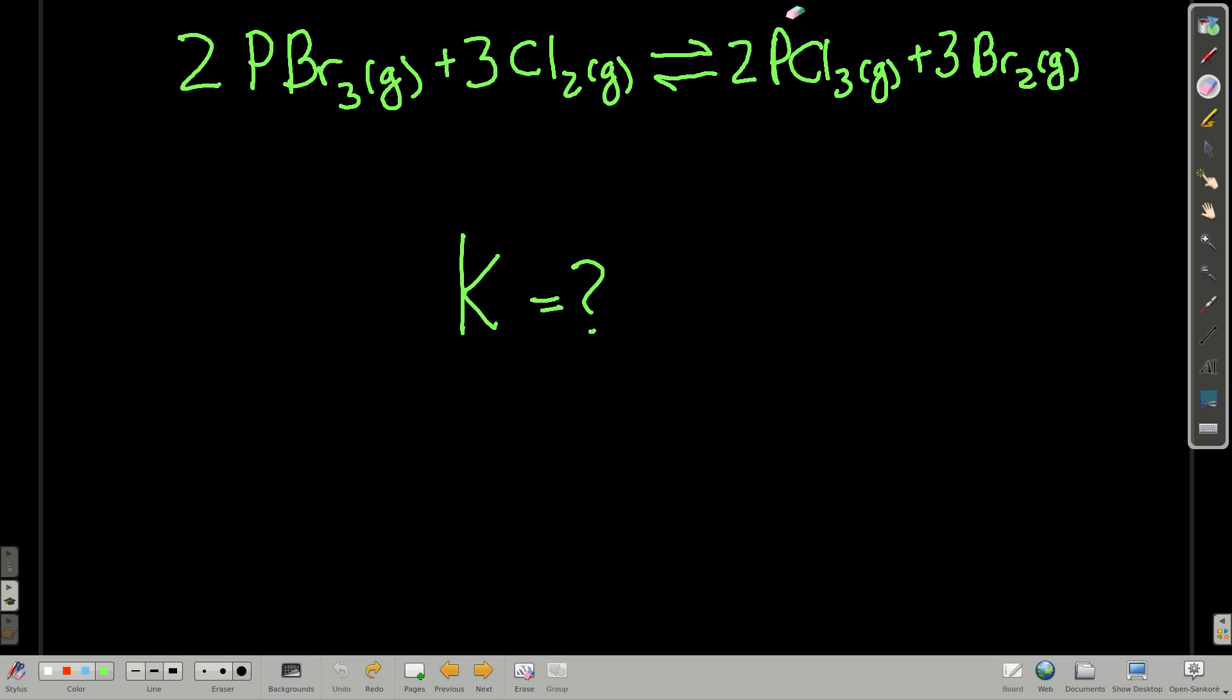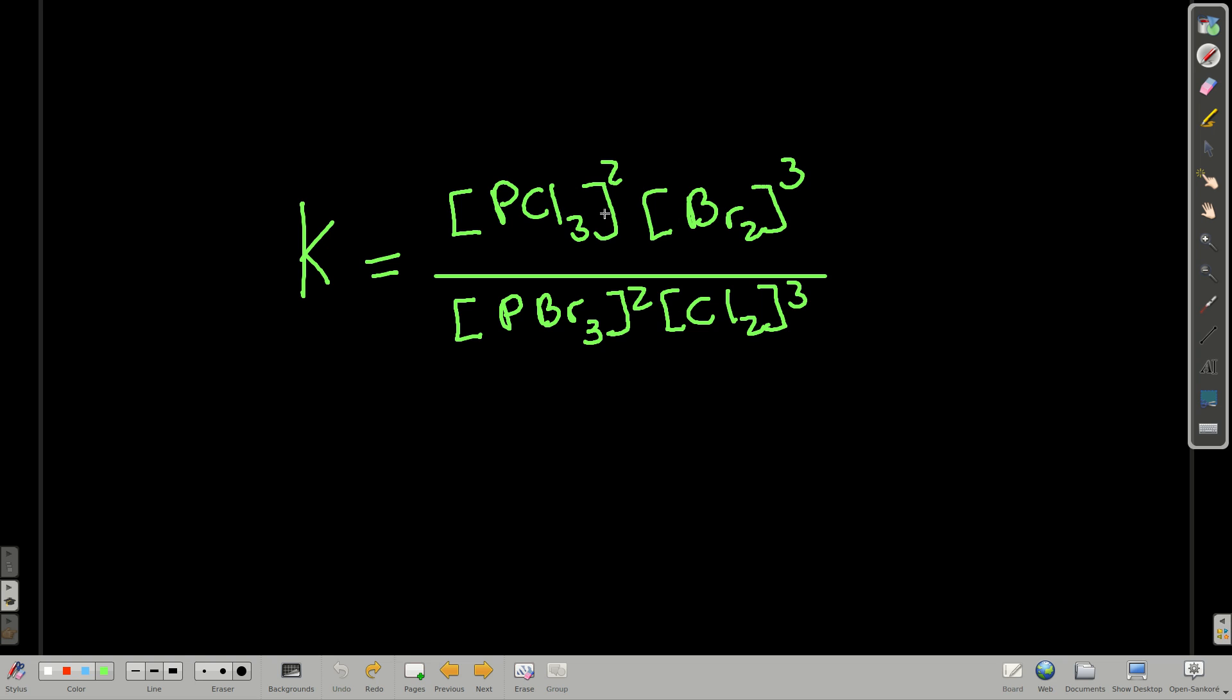For this particular reaction, what is the equilibrium expression? That just means we fill in the A's, the B's, the C's, and the D's. Remember, it's products over reactants, concentration raised to the powers of their coefficients. So in the numerator on top, we're going to put phosphorus tribromide and bromine, concentration of bromine to the third power, phosphorus tribromide to the second, and then the denominator, concentration of chlorine to the third power, concentration of phosphorus trichloride to the second, just like this. Products on the top, reactants on the bottom, concentrations raised to the powers of their coefficients.